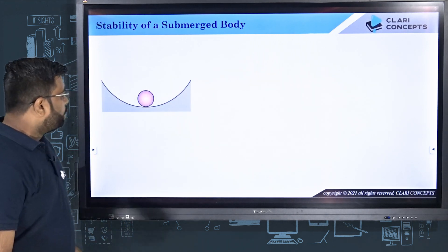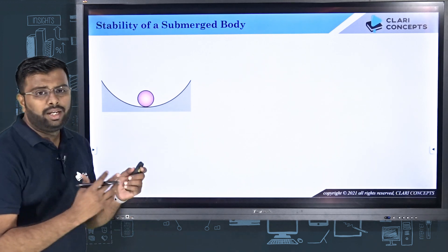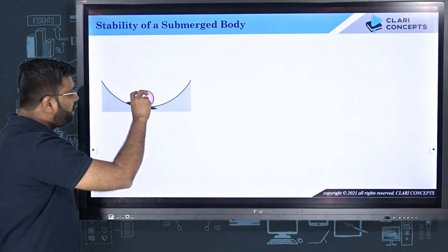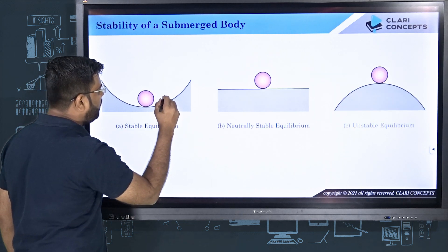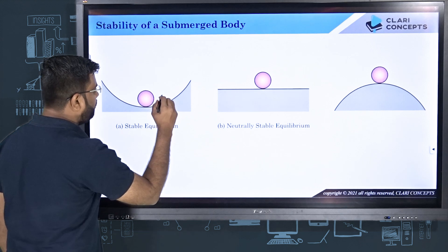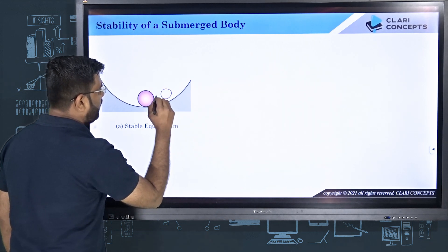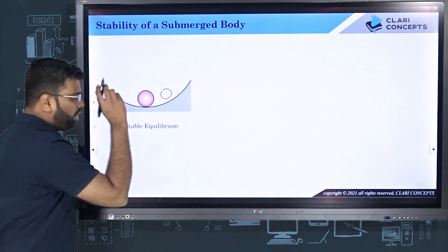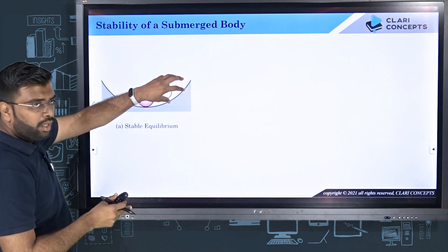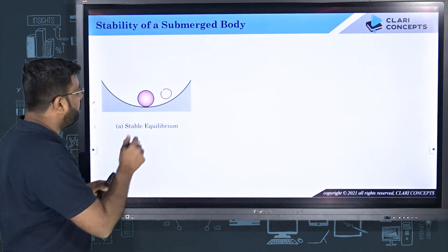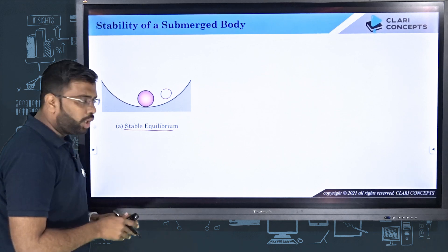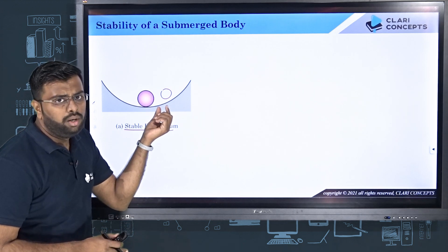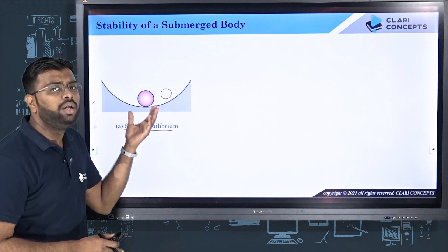Before I move on, let me explain several terminologies associated with this topic. Consider a curved surface with a spherical ball. If I disturb the ball and move it to another position and then release it, the ball will return to its original position. This kind of equilibrium is called stable equilibrium — a position wherein even after disturbing the ball, it retains its original position.